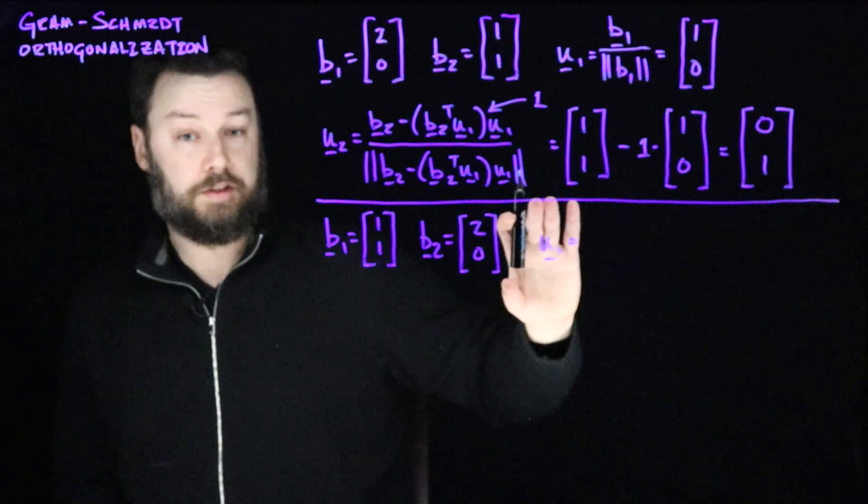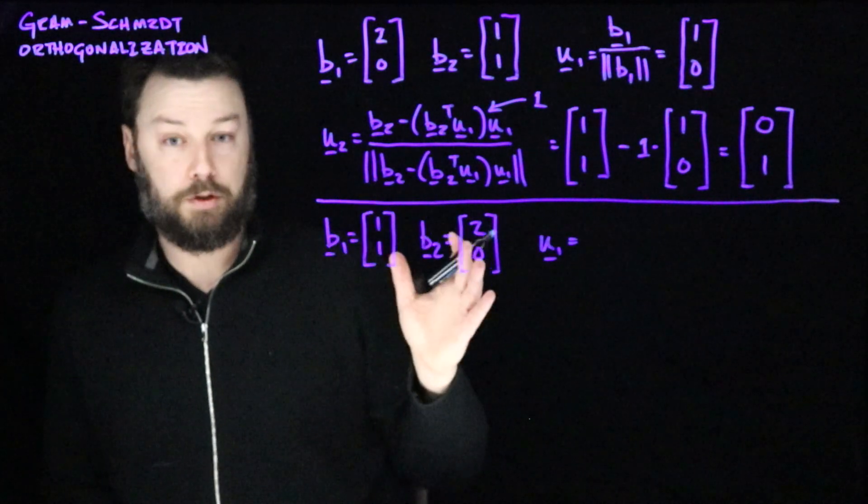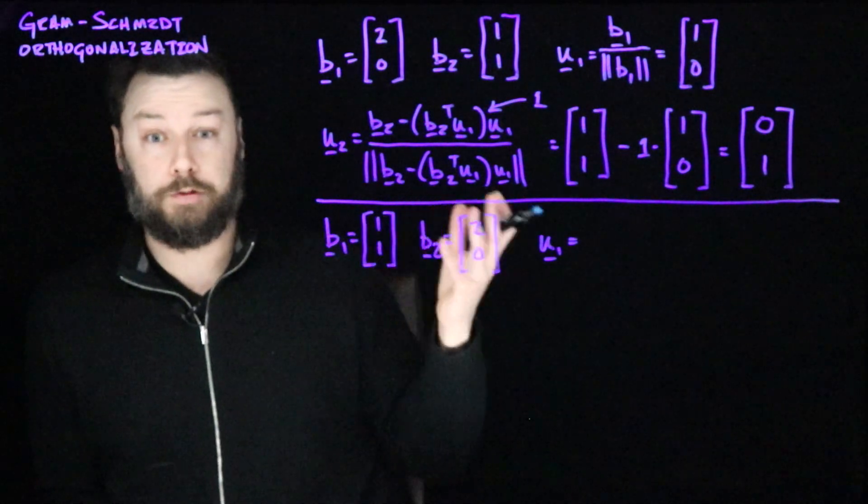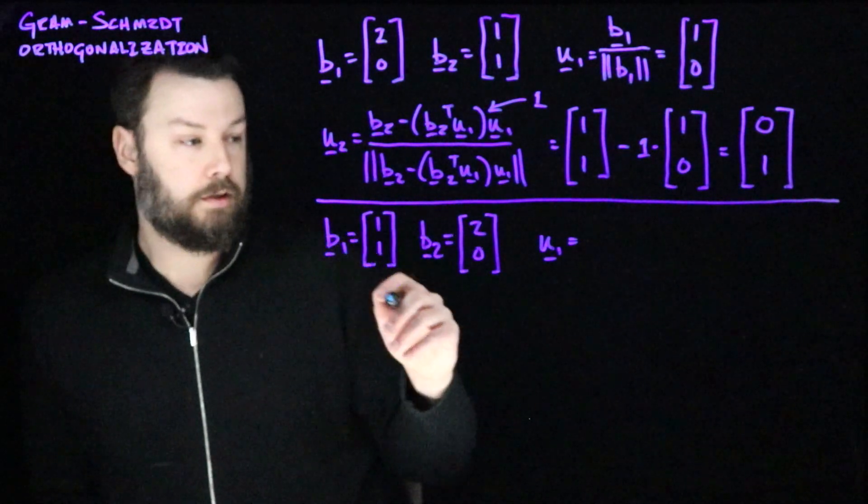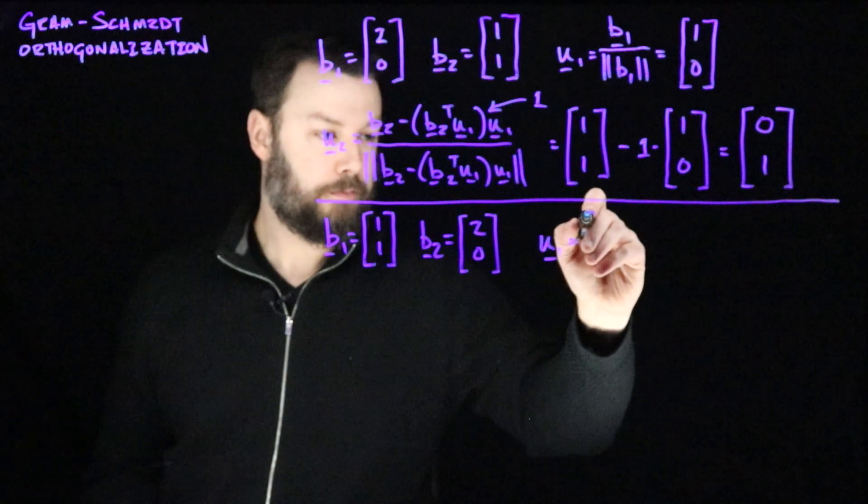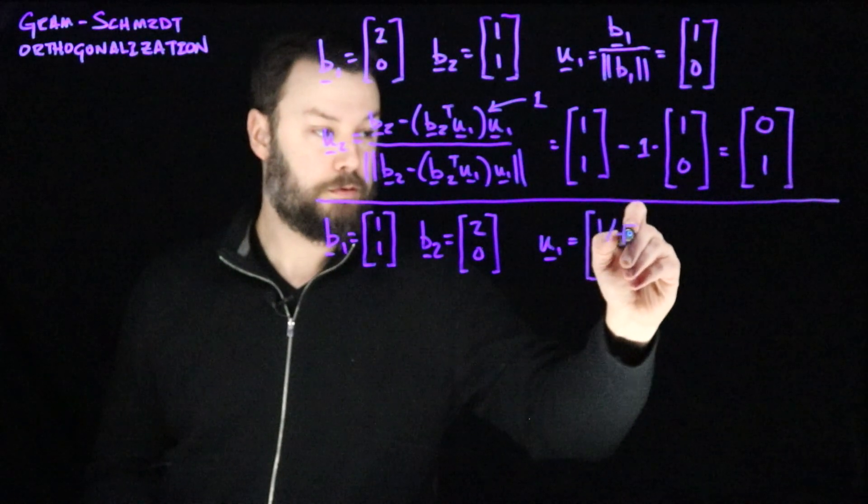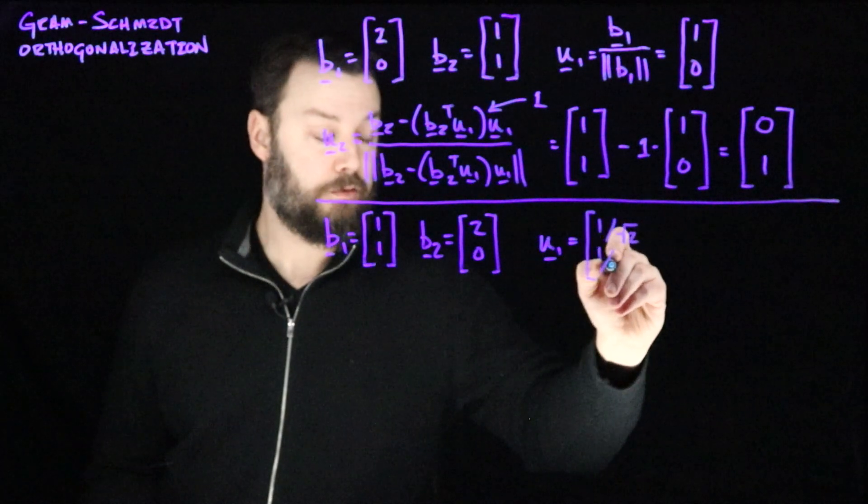So step one is just a scale. So we're going to take b1 and compute its norm. Its norm is going to be the square root of 1 squared plus 1 squared. So the square root of 2. So u1 is going to be 1 divided by the square root of 2 and 1 divided by the square root of 2.